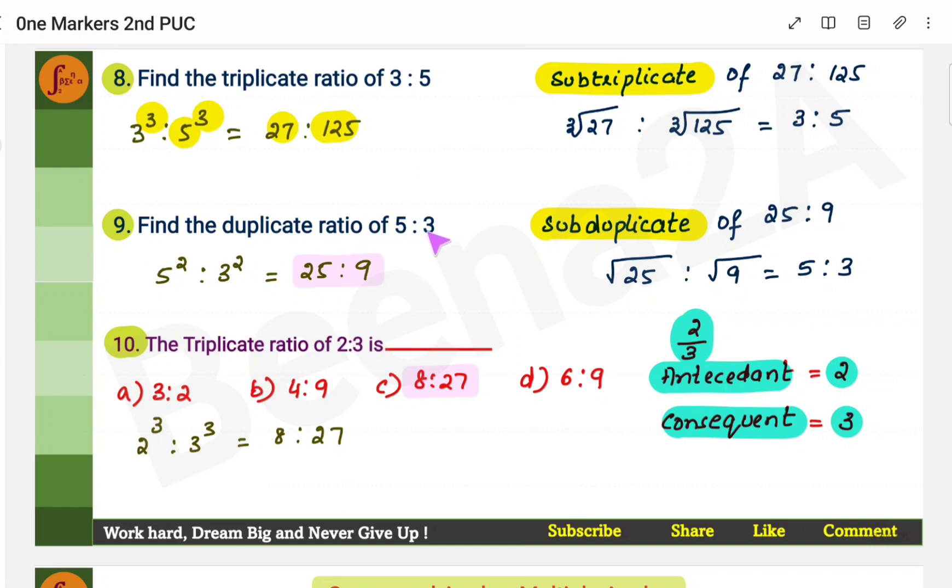Find the duplicate ratio. Duplicate means 2. Duplicate means 2. So 5 into 5, 5 square, 25. 3 into 3, 9. Now another example. Triplicate ratio of 2 is to 3 is 2 cube, 3 cube, which is 8 is to 27.